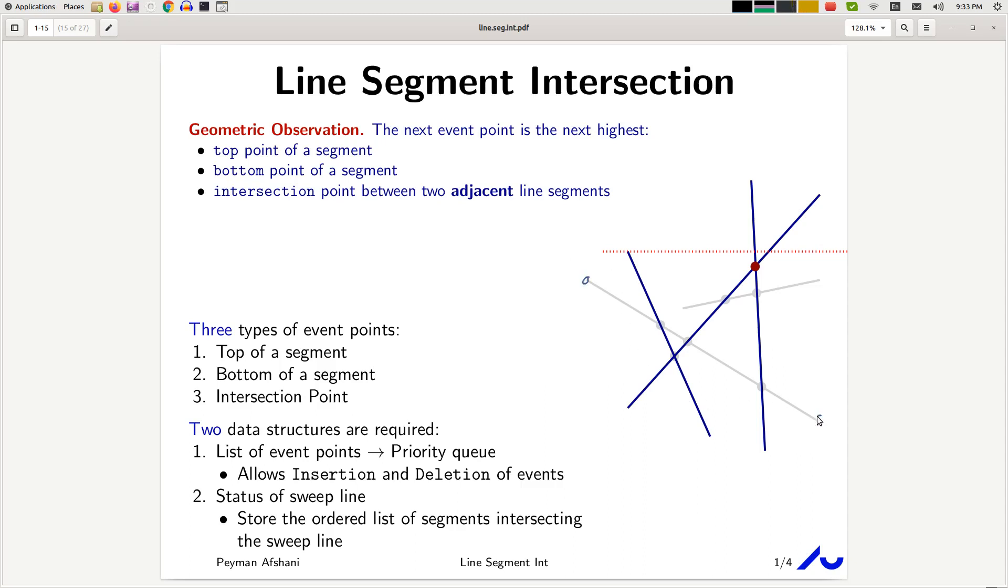the end, and the intersection points. So obviously the next event point is the highest event point among all these three types of event points that you have.